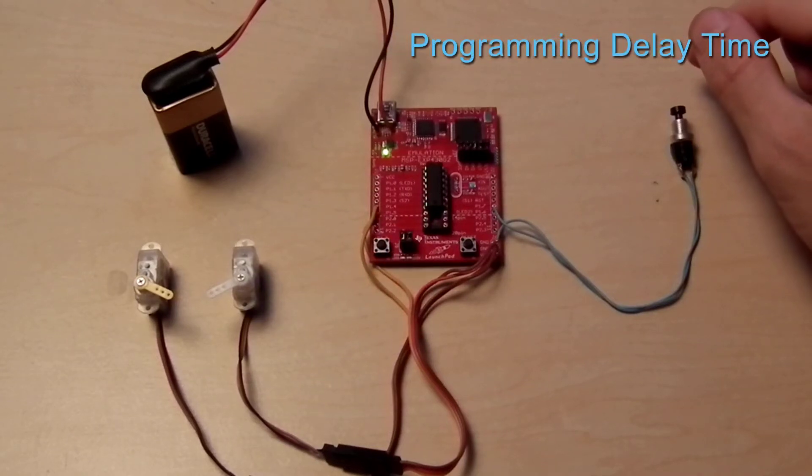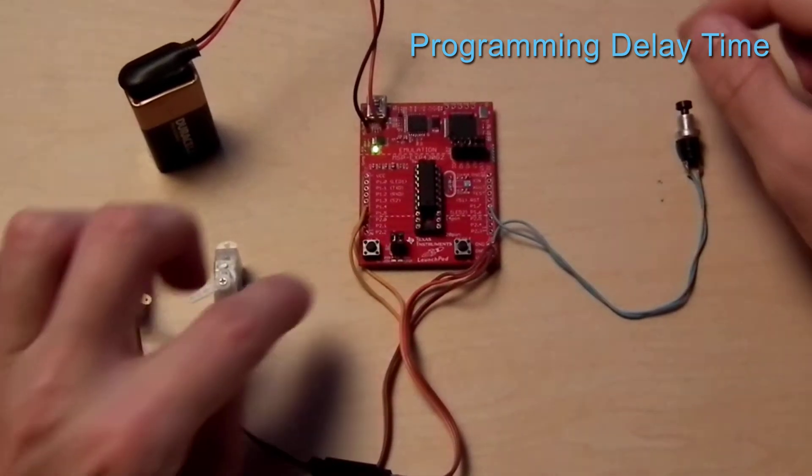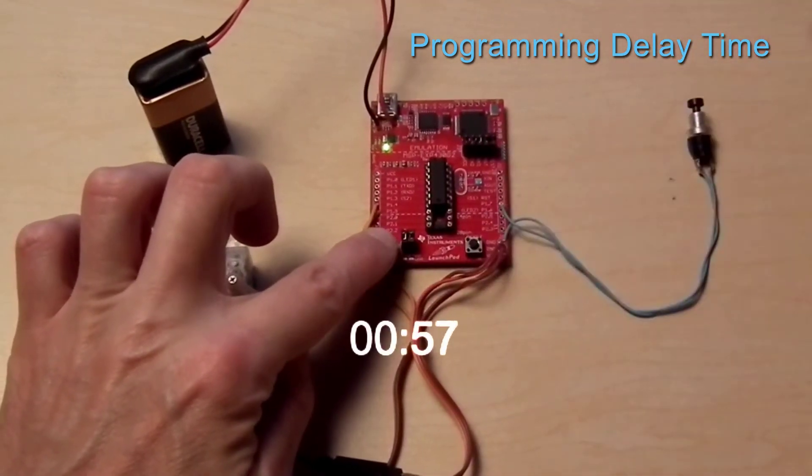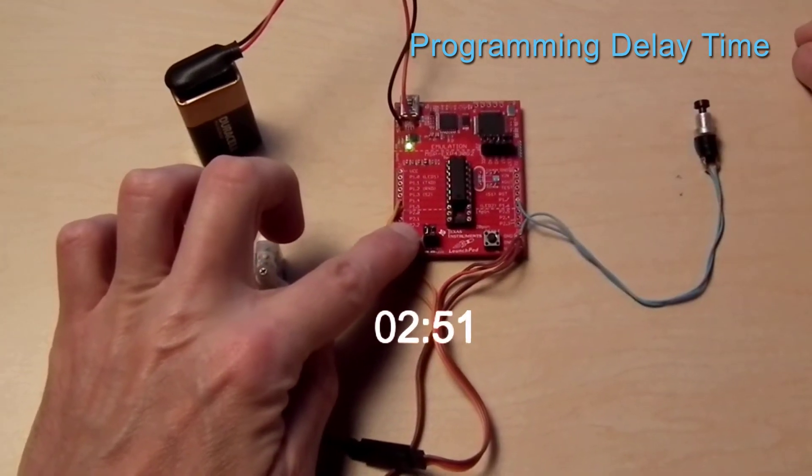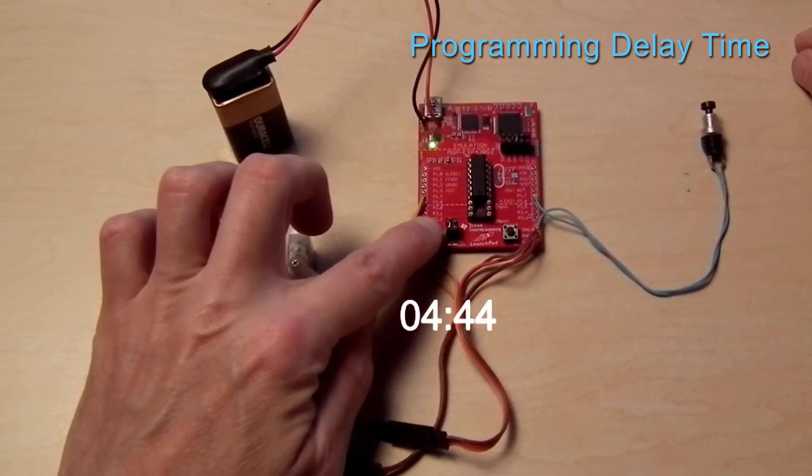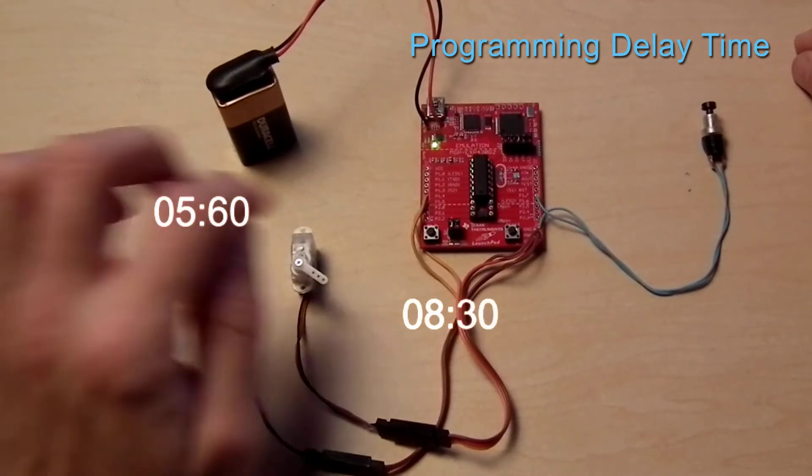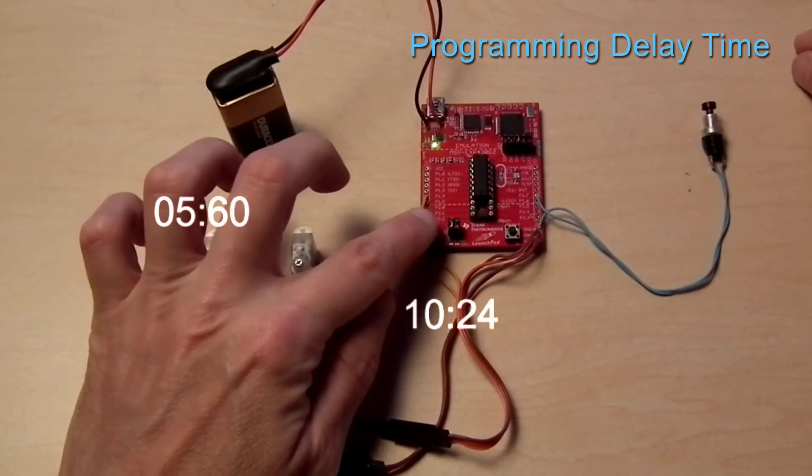For example, if we wanted to set a servo A delay time of 5.5 seconds and a servo B delay of about 10.5 seconds, we hold in mode, tap reset, and then count off 5.5 seconds. We then release the mode button, setting the time for servo A.